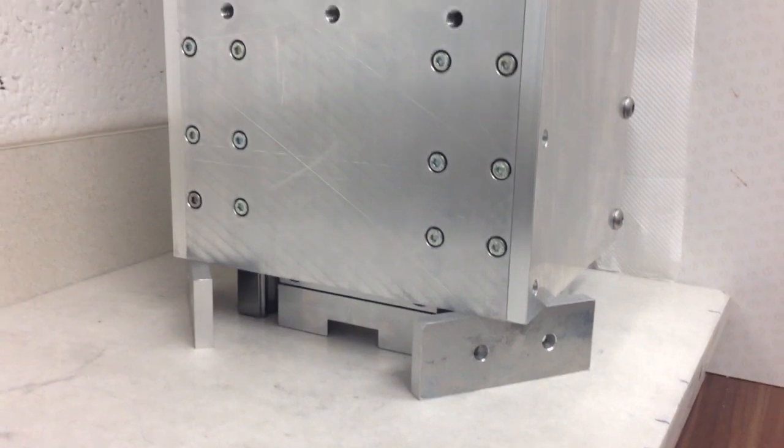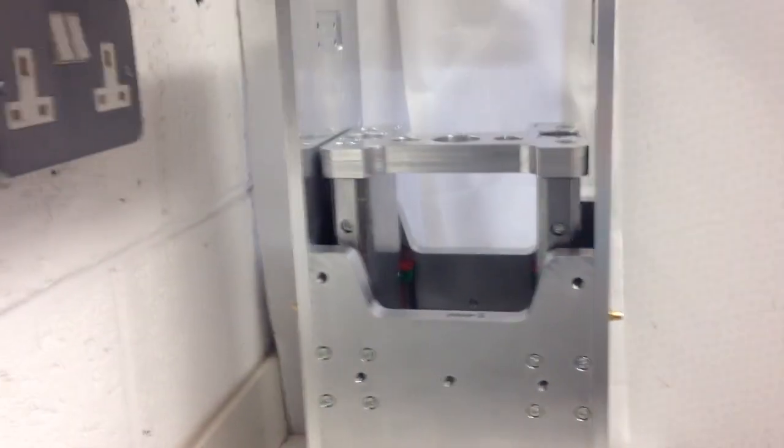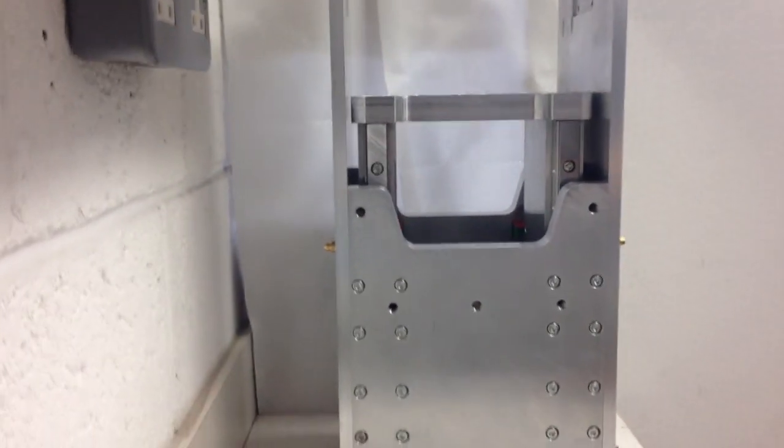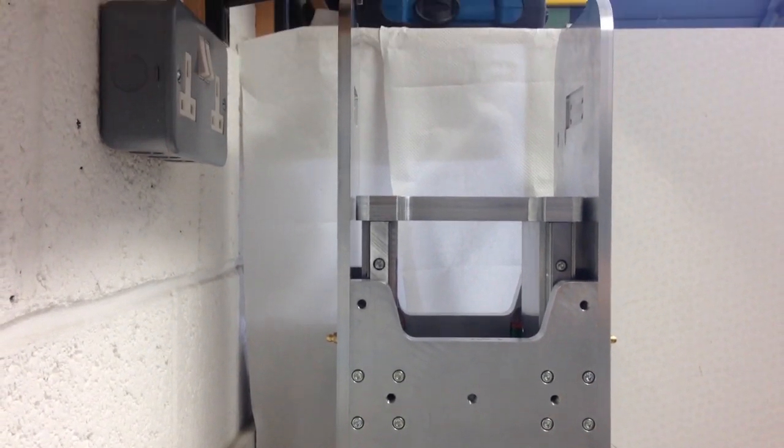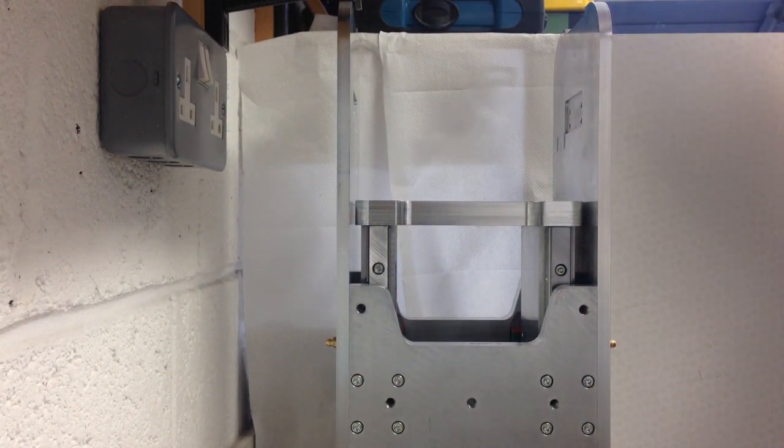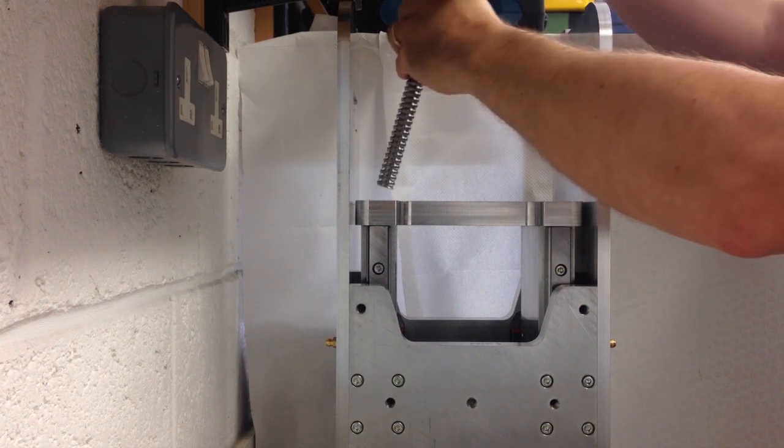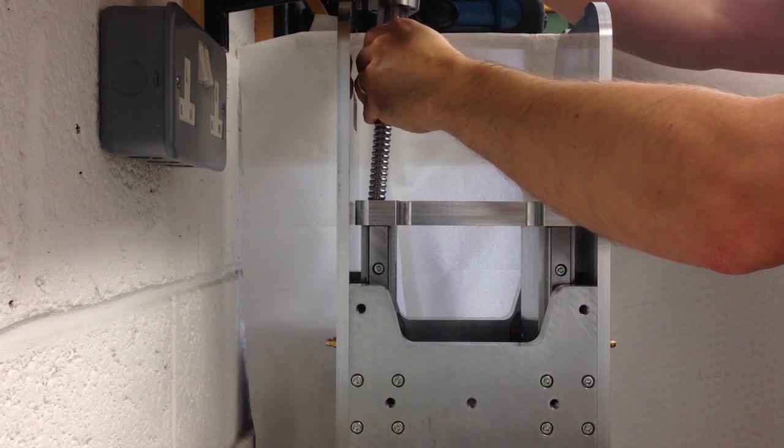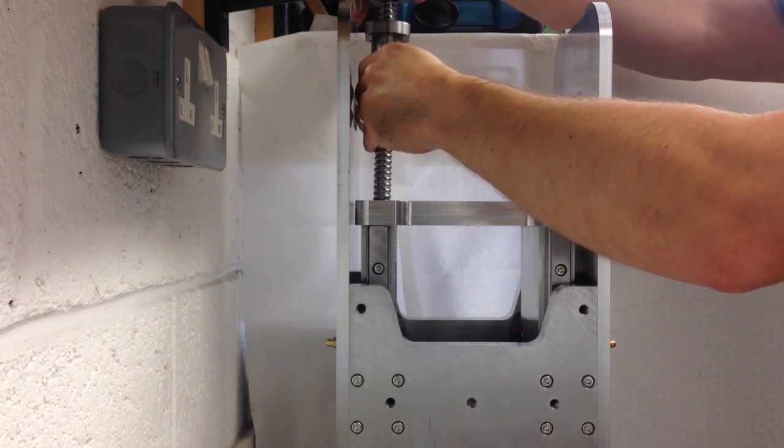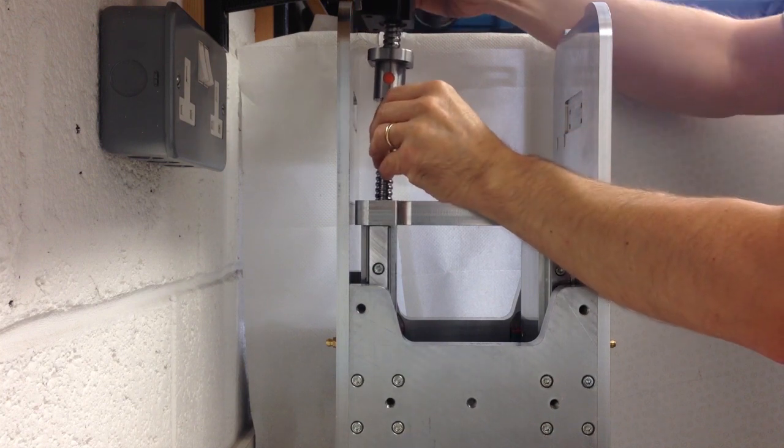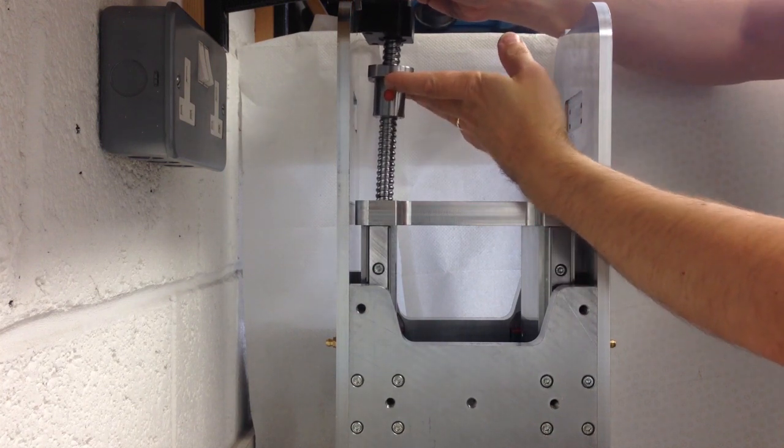So this will be the new ball screw going in. As I say the other one was at this point still on the existing CNC machine because I still had quite a few parts to make. Just carefully dropping that in, so that's going inside that 30 millimeter section that goes at the side. That was quite fun to bore out on the lathe but we got there.